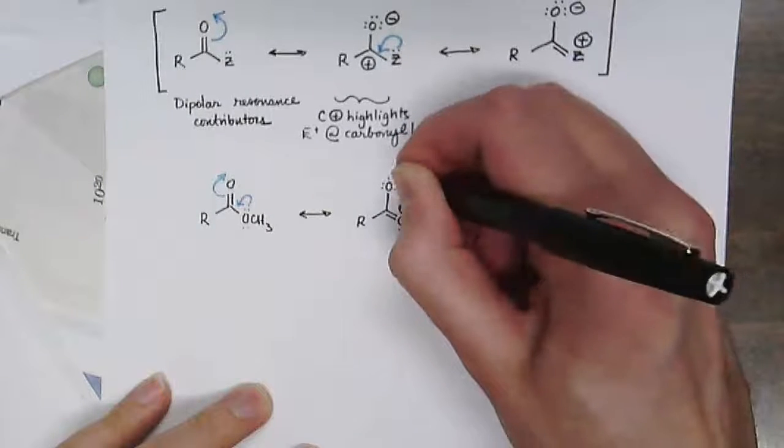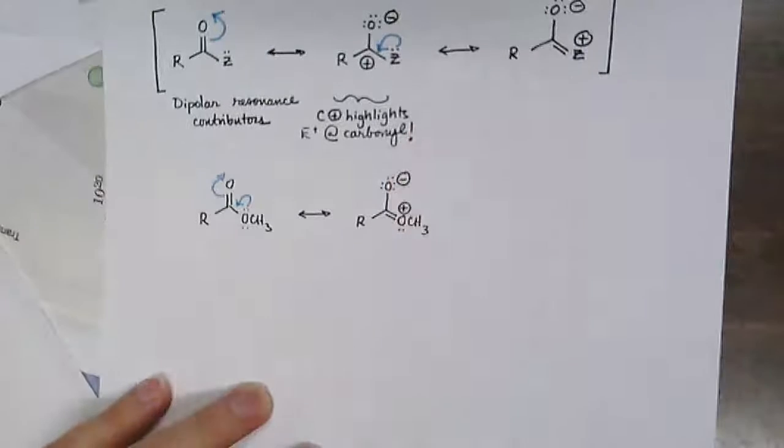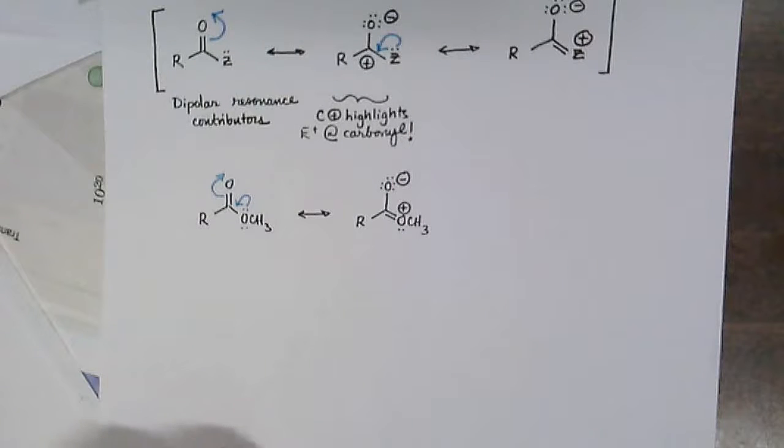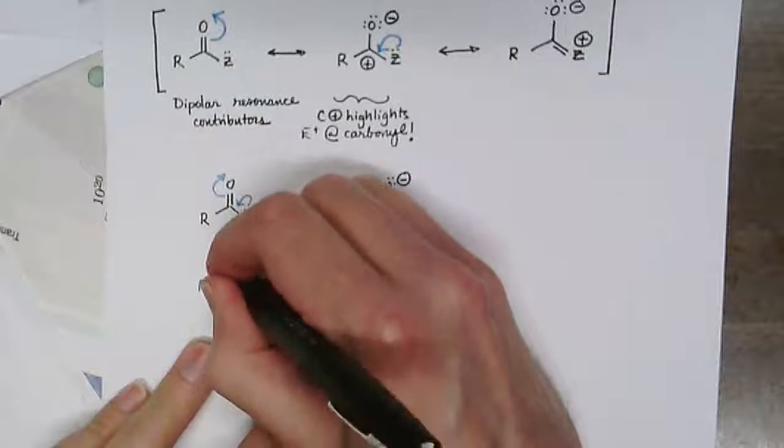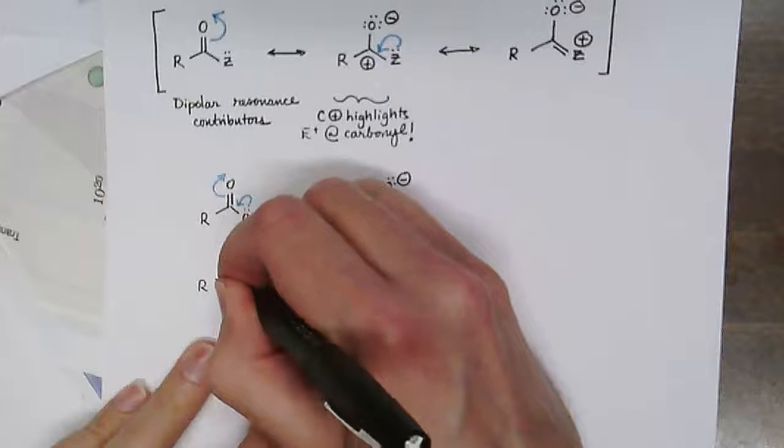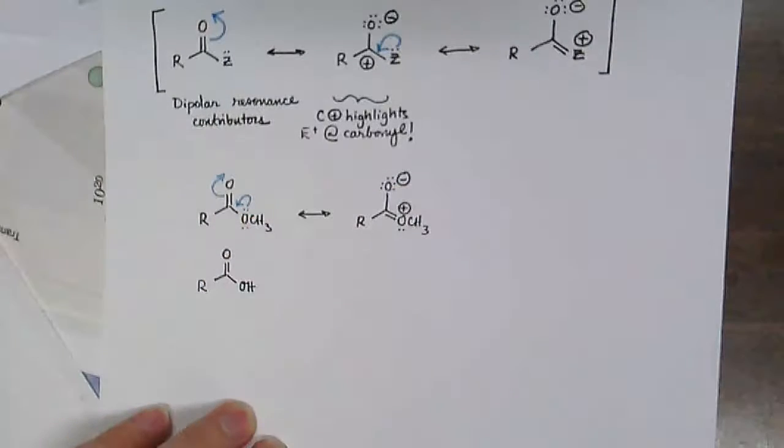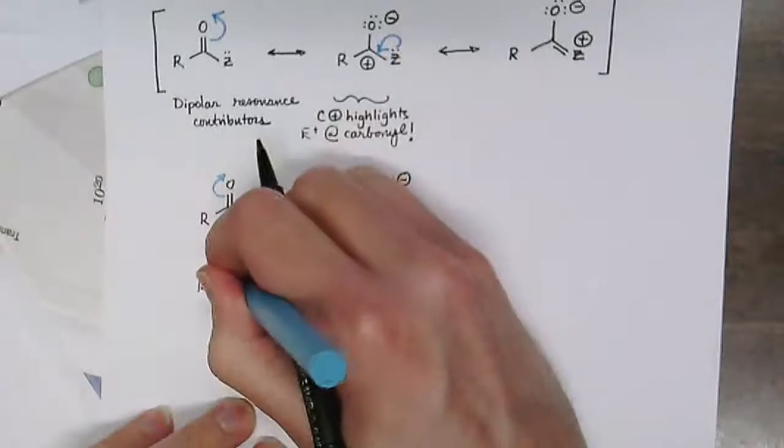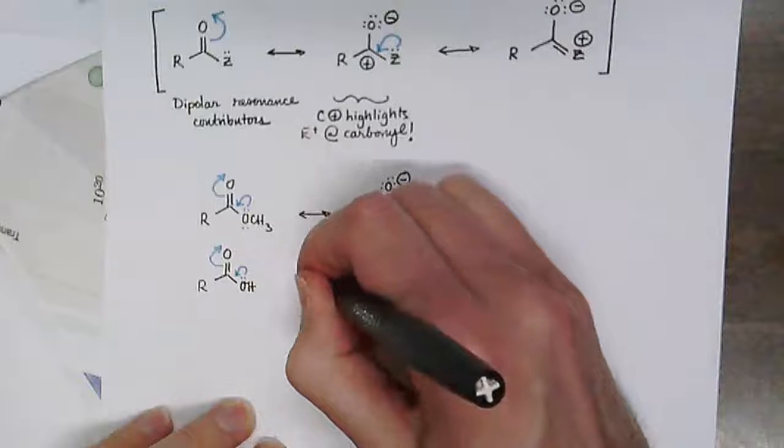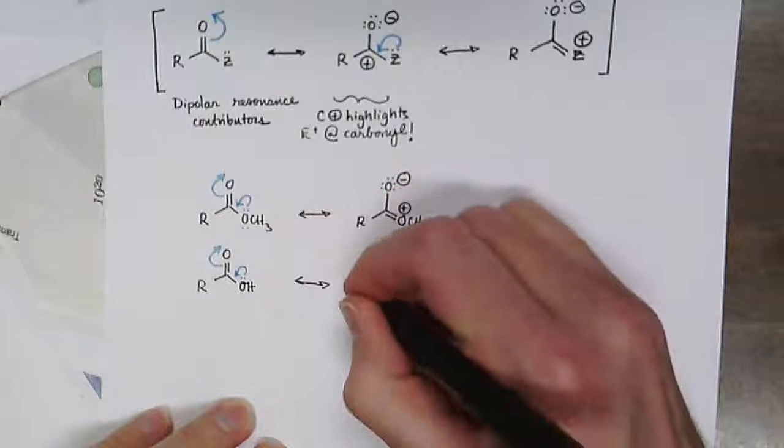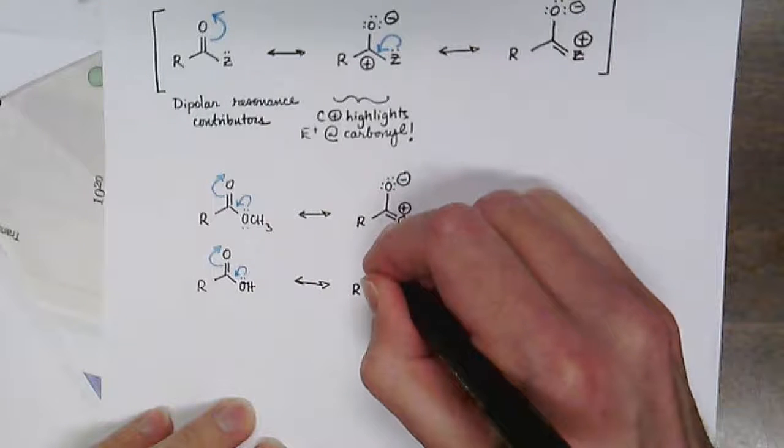and a negative formal charge on the carbonyl oxygen. Similarly, we can do the same thing with the carboxylic acid, where again we can pull electron density from the OH and draw the dipolar resonance structure here as well.